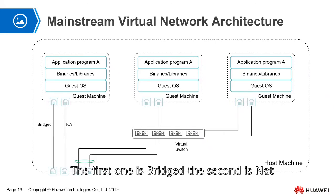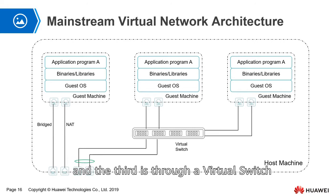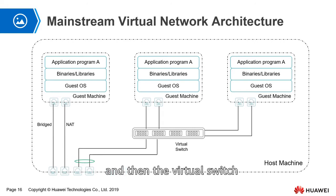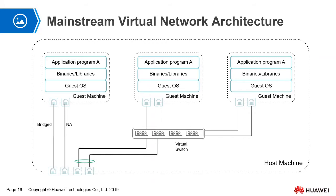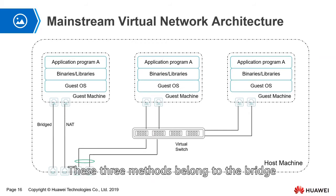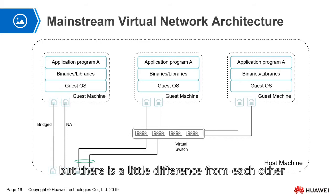The first one is bridge. The second one is NAT. And the third is through a virtual switch, which is connected to the physical network card. In fact, these three methods all belong to the bridge, but there is a little difference from each other.